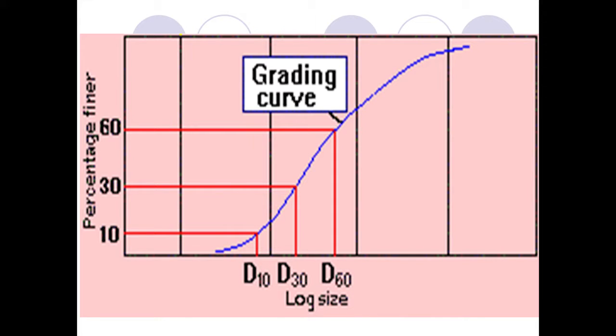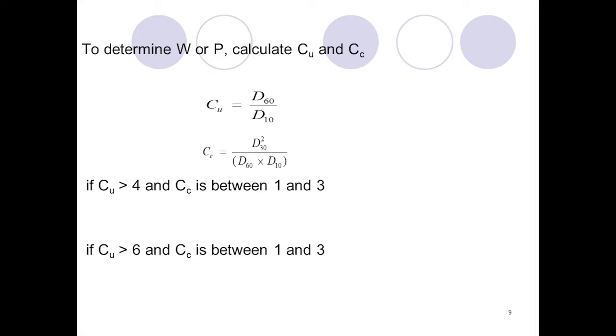The grading curve is used to determine D10, D30, and D60. D60 means 60% finer of that particle size, D30 is 30% finer, and D10 is the effective diameter. To calculate Cu, coefficient of uniformity, Cu equals D60 by D10. Cc, coefficient of curvature, equals D30 squared by D60 times D10. These are used in filter design.